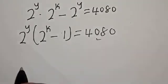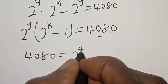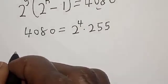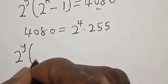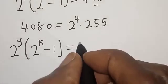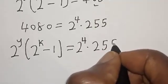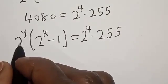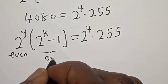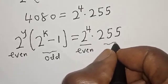Now let's work with 4080. We can write 4080 as 2 raised to power 4 multiplied by 255. So our equation becomes: 2 raised to power y times (2 raised to power k minus 1) equals 2 raised to power 4 times 255. Notice that 2 raised to power y is even, and (2 raised to power k minus 1) is odd. Similarly, 2 raised to power 4 is even, and 255 is odd.